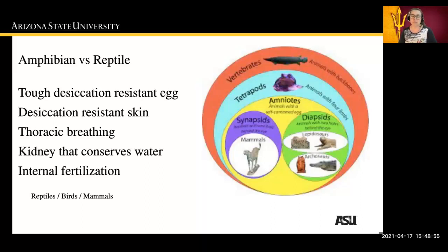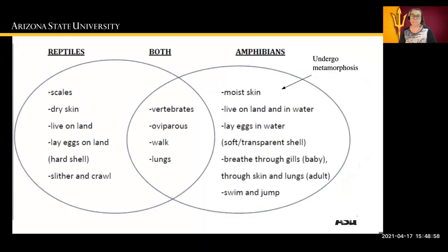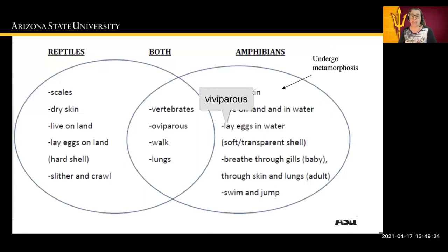Amniotes consist of reptiles, birds, and mammals. Reptiles have scales as well as dry skin. They live on land and lay their eggs on land, and their eggs have a hard shell. They slither or crawl. Both reptiles and amphibians are vertebrates. They can be oviparous or viviparous, and they have lungs, although amphibian lungs are not as well developed.